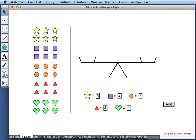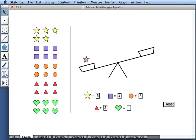Let's start by dragging a star onto the left pan. The balance tips to the left.